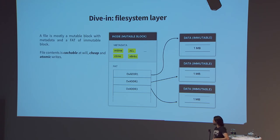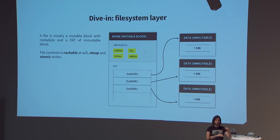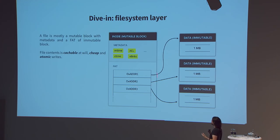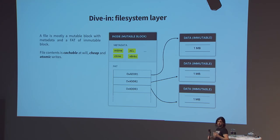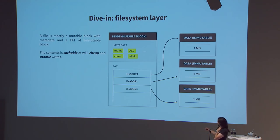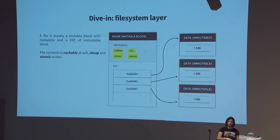This also gives us atomic file writes. While you are pushing immutable blocks into the system, you have not updated the file yet — it's only when you actually commit to the inode with the new FAT that you make the actual change. So this is an atomic operation, similar to tricks on radix trees for atomic updates. We get atomicity at the syscall level — all syscalls are transactional, all or nothing.